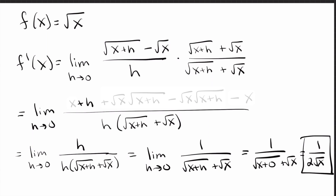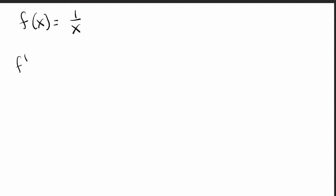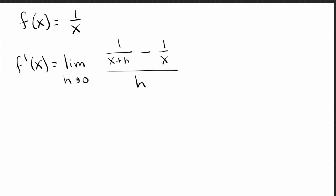Let's do problem five. This one features the third and final trick you see a lot with these derivatives. The first trick was squaring out from problem three; the second was multiplying by the conjugate from problem four. Plugging into the limit definition, we get 1 over x plus h, minus 1 over x, over h. When you get here it may not be obvious what to do — but you have fractions being subtracted, so get common denominators and subtract them.